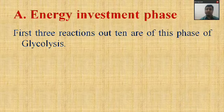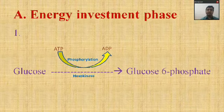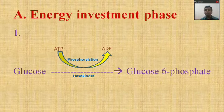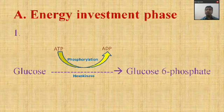The energy investment phase consists of the first three reactions out of ten. In the first reaction, glucose is converted into glucose-6-phosphate. This reaction is called phosphorylation, as there occurs addition of one phosphate group. The reaction is catalyzed by the enzyme hexokinase. Since the phosphate group is obtained from one ATP molecule, there occurs loss of one ATP molecule — hence it is called the energy investment phase.